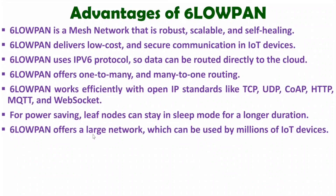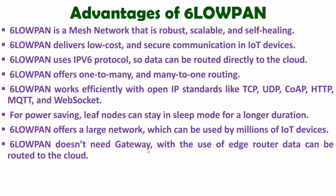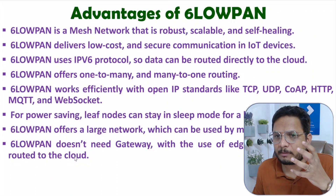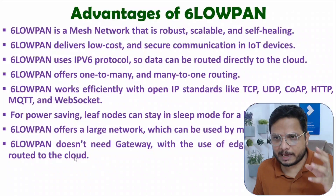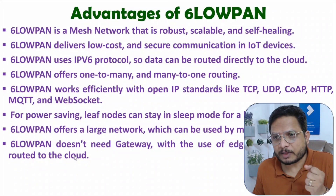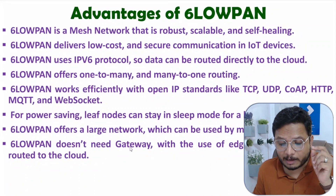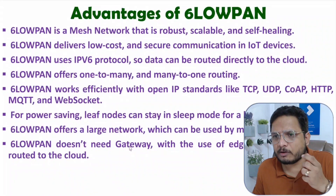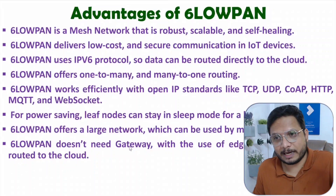6LoWPAN offers a large network that can be used by millions of IoT devices. It doesn't need a gateway — with the use of an edge router, data can be routed to the cloud. The cost of a gateway is high compared to a router, so using an edge router in 6LoWPAN for internet communication is more cost-effective.